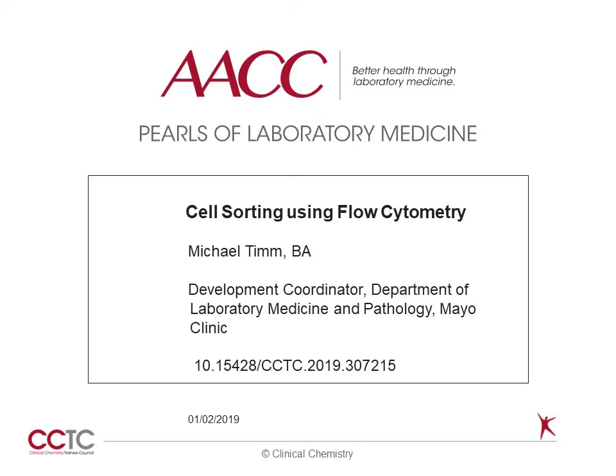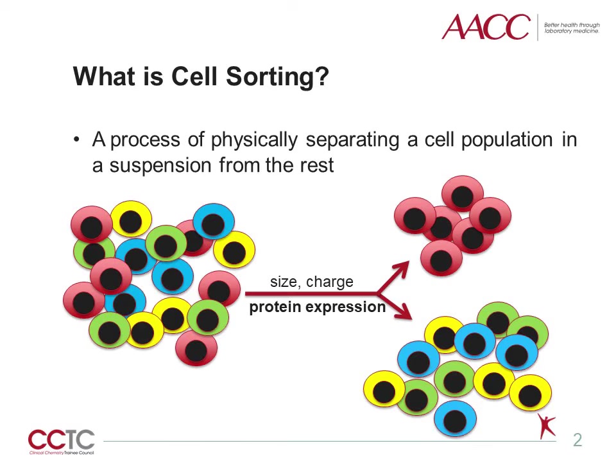Welcome to this Pearl of Laboratory Medicine on Cell Sorting Using Flow Cytometry. Cell sorting is a process of physical separation of a target cell population from a heterogeneous mixture of cells. The unique property of the target cell population can be simply their size or charge, such was the case in early cell sorting using filtration and sedimentation methods. More recently, all sorting is based on the unique expression of proteins on the cell surface using labeled antibodies to define the cell population.